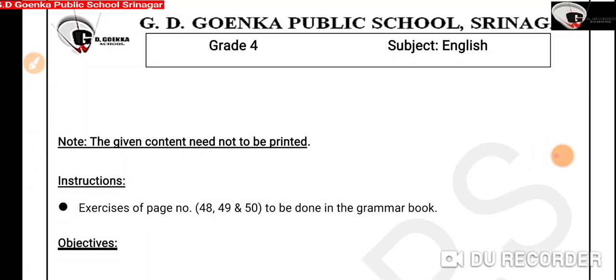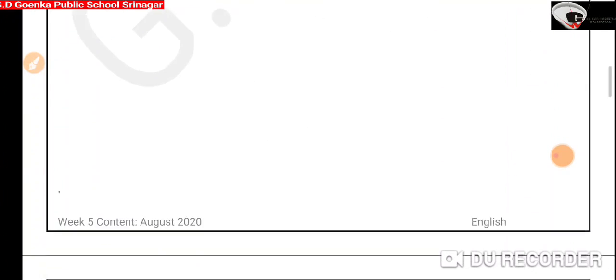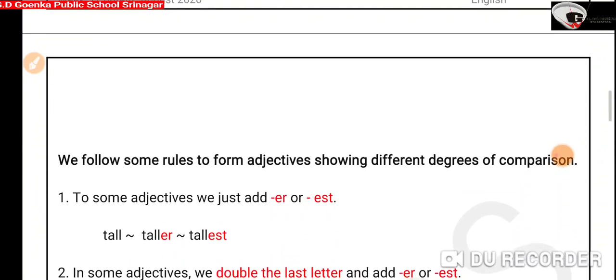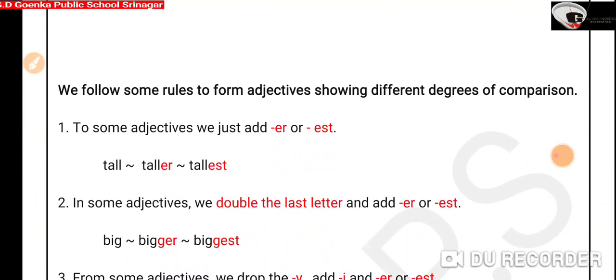Lesson number 11, page number 48. We are going to learn about some of the rules used to form adjectives showing different degrees of comparison.